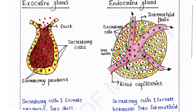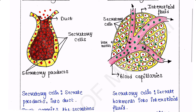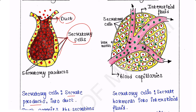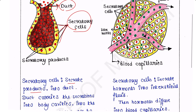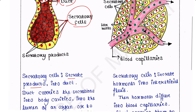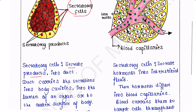Exocrine glands have some secretory cells. These secretory cells secret products into a duct. These are the secretory cells — the yellow ones. They secret some products into the duct, which we can see here. Exocrine glands basically have ducts; the duct carries the secretions into body cavities, into the lumen of an organ.